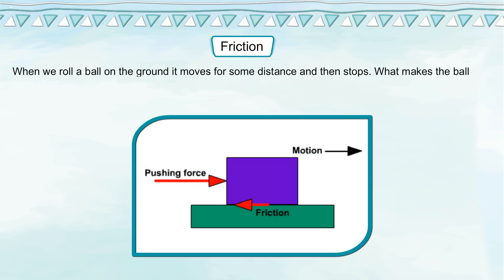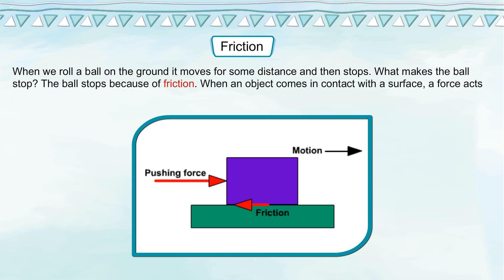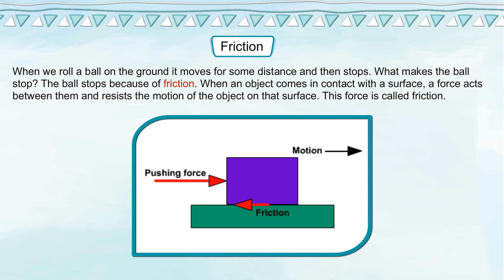Friction: When we roll a ball on the ground, it moves some distance and then stops. What makes the ball stop? The ball stops because of friction. When an object comes in contact with a surface, a force acts between them and resists the motion of the object on that surface.